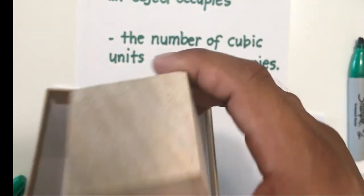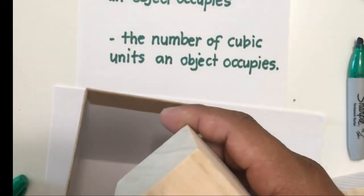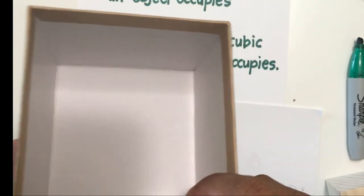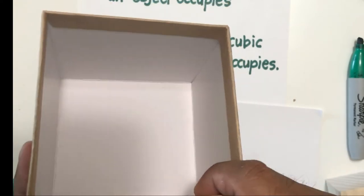So the choice of cubic units is very important when you compute for the volume of a solid object. So if the object is very small, then you might use cubic centimeters. If the object is like this, you might use this.